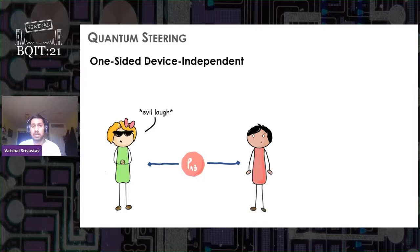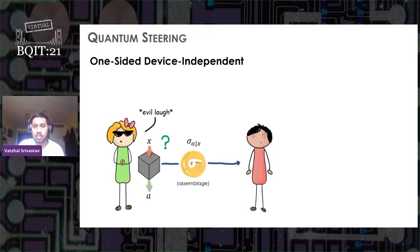What I mean by not trusting is we will assume her measurement to be in a black box. What governs the dynamic of this black box we don't know. We just know that she gives it some input x and the box gives some output a. Through her measurement, Alice conditions the state rho AB, or steers the state rho B to sigma ax, which is also known as assemblage.